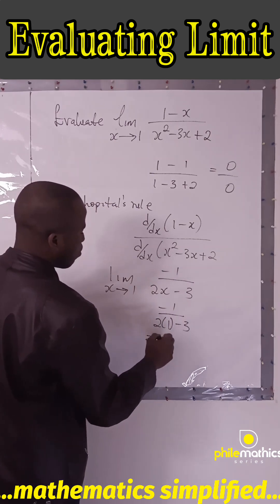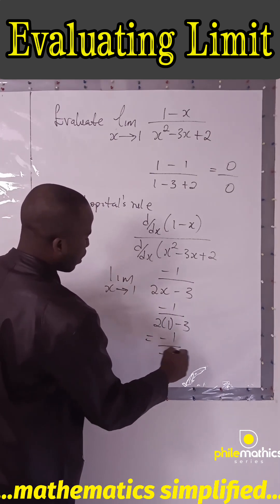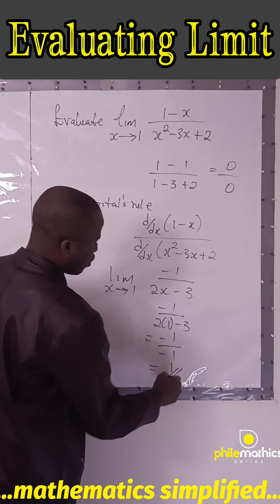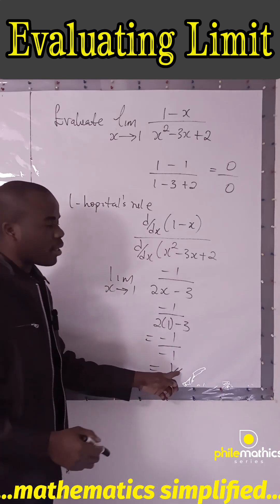This is minus one. Two minus three is minus one. Minus one over minus one is one, so the answer is one. Thank you for watching.